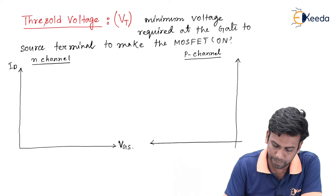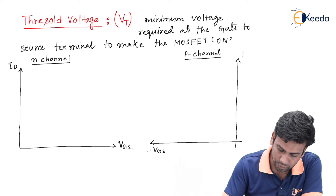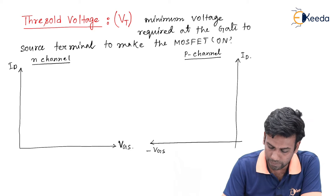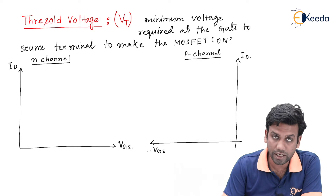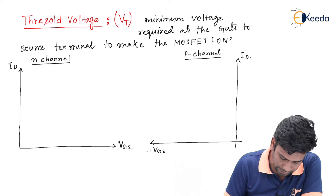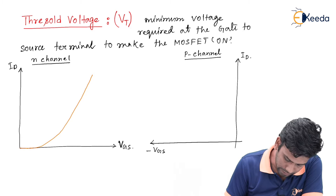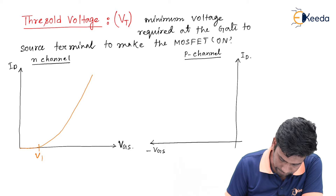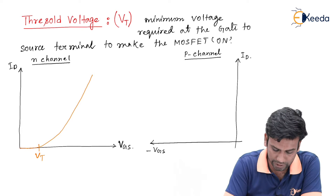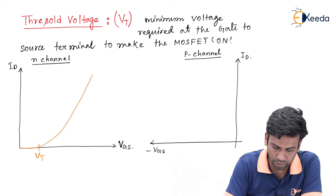For the P-channel, the required VGS voltage is negative, so VGS should be drawn on the negative x-axis. The transfer characteristics for the P-channel will look like this. This is the threshold value of the N-channel MOSFET when the MOSFET is just ON.